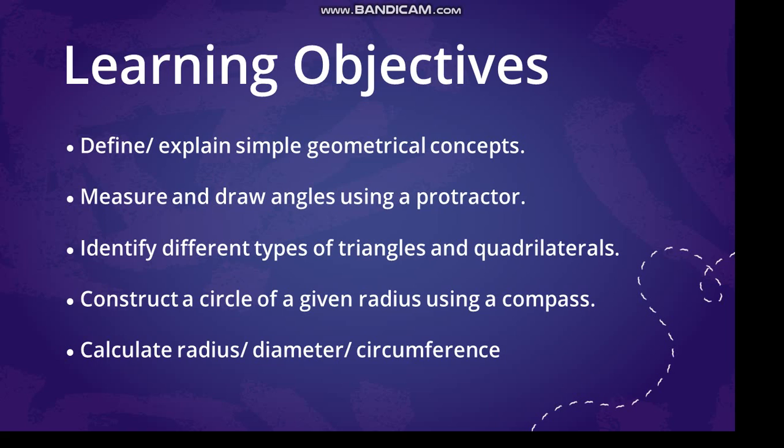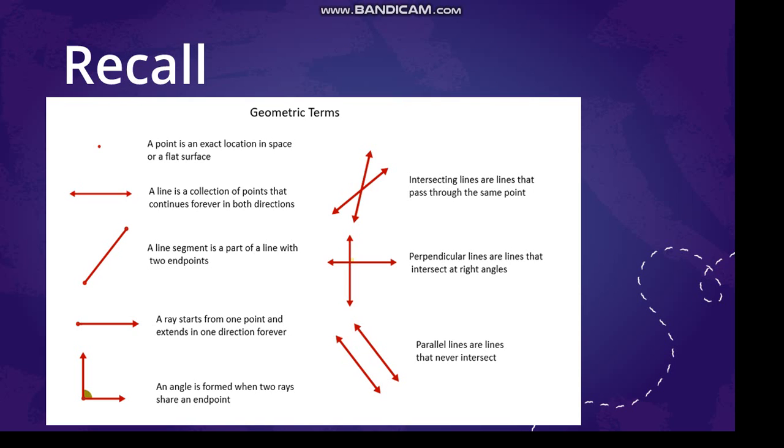Before we go into the video in detail, let's see what are the learning objectives of this particular chapter. You will be learning how to define or explain simple geometrical concepts, then you will be learning how to measure and draw angles using a protractor, identifying different types of triangles and quadrilaterals, that is different types of polygons, then also we'll be learning how to construct a circle using a compass and finding the radius, diameter, and circumference.